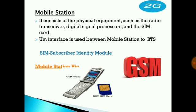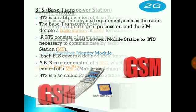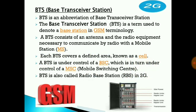The mobile station consists of physical equipment such as a radio transceiver, digital signal processor, and the SIM card. The Um interface is used between the mobile station and BTS. SIM is an abbreviation of Subscriber Identity Module.